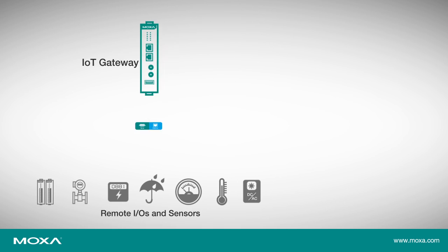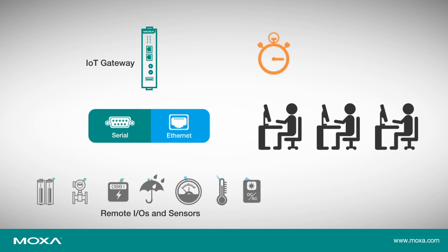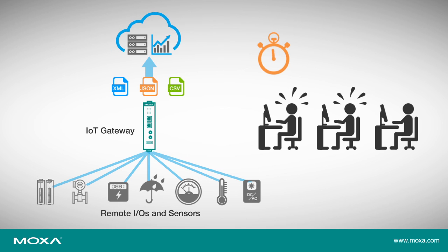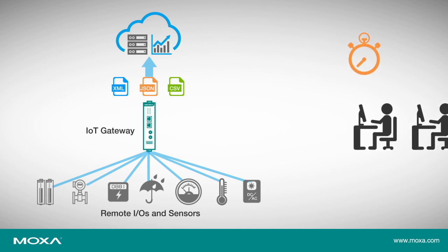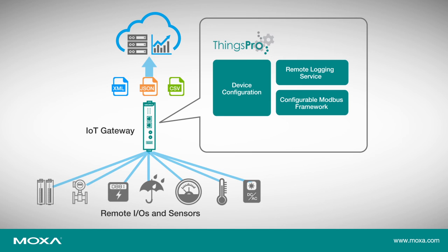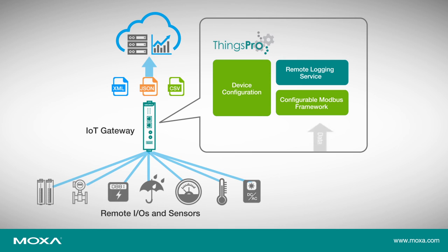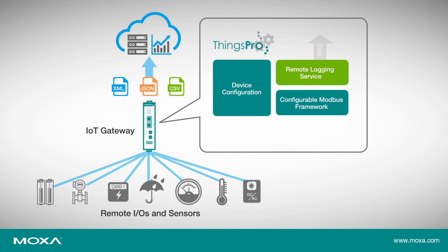Since most industrial protocols do not generate data that is compatible with the formats required by data analytics solutions, companies have to implement complex data conversion solutions for industrial protocols that they are not familiar with. The ThingsPro data logger tool automatically converts field bus protocols and data formats used by legacy equipment to make them compatible with the formats used by data analysis tools, such as big data.